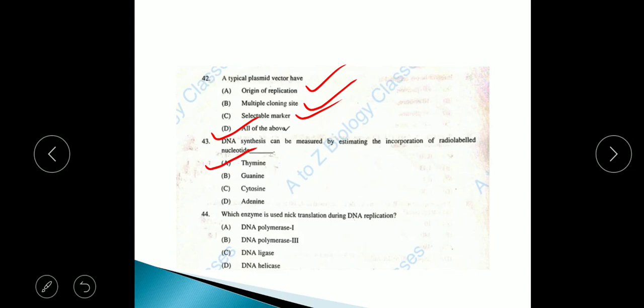Question 44: Which enzyme used nick translation during DNA replication? The answer is DNA polymerase 1 used nick translation during DNA replication.